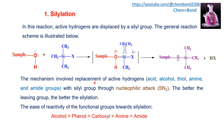The mechanism involves replacement of active hydrogen from acids, alcohols, thiols, amines, and amides with silyl groups through nucleophilic attack — the SN2 mechanism is involved. The better the leaving group, the better the silylation reaction. The ease of reactivity of functional groups towards silylation follows the order: alcohol is more reactive than phenol, which is more reactive than carboxyl, then amine, and lastly amide.